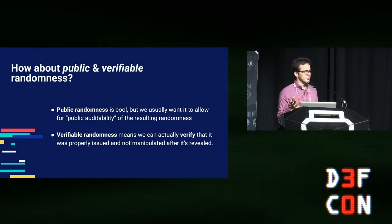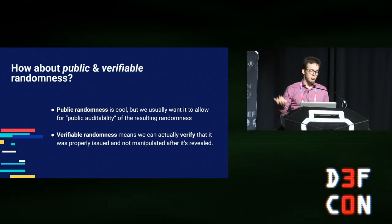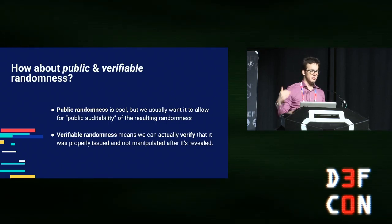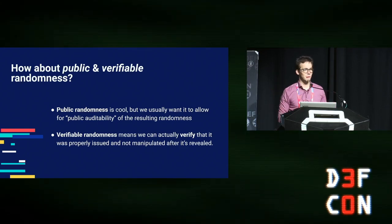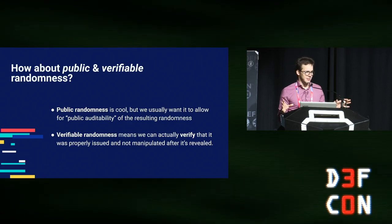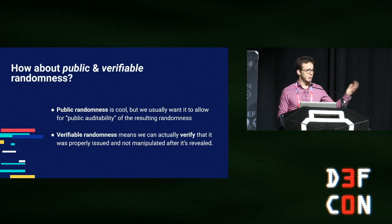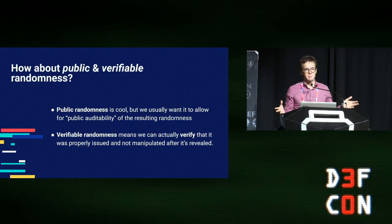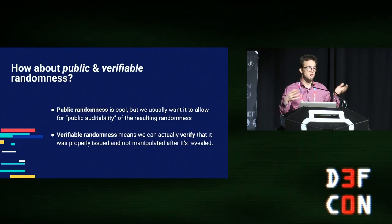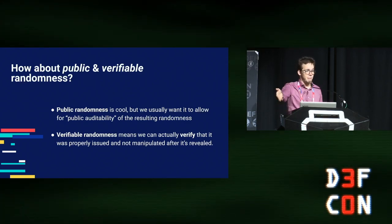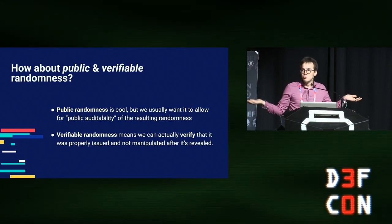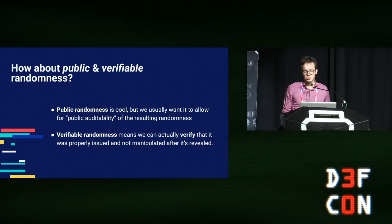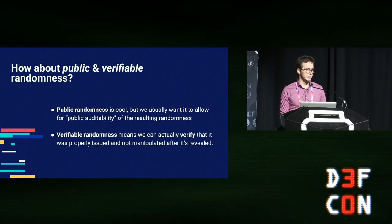Public randomness is nice, but there's a problem: if I ran a lottery today and my pal Patrick won, you'd be skeptical — you'd think I cheated. That's where verifiable randomness comes in. It means you're able to verify the randomness was drawn properly. If I use verifiable randomness, you could verify I wasn't cheating, and I'd be off the hook. Verifiable randomness is very useful when dealing with public randomness.